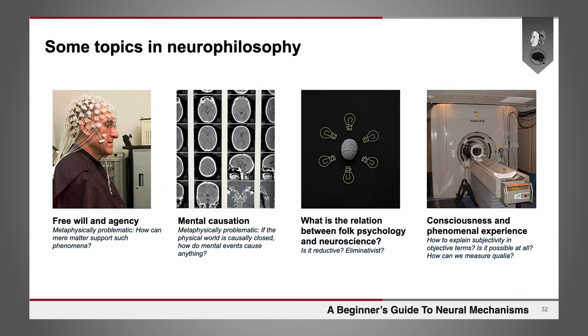Another question is the relationship between folk psychology and neuroscience. Is it reductive? Is it eliminativist? Is there no such thing as any of our folk psychological constructs? And then there's the deep question of consciousness and phenomenal experience. How do we explain subjectivity in objective terms? Is that possible at all? Is there any scientific explanation or even way to measure things like subjective experience or qualia?